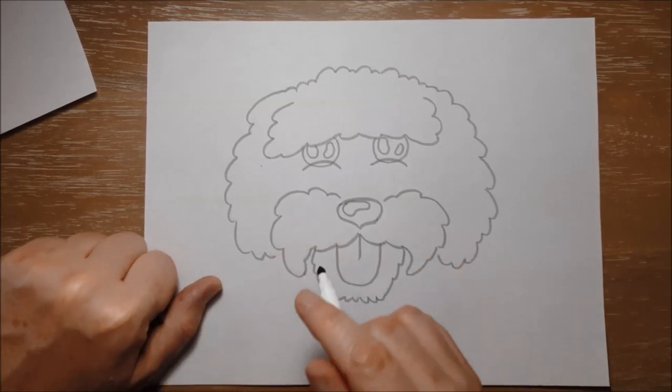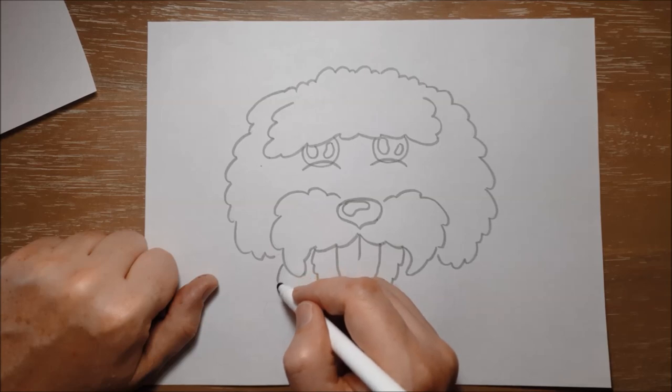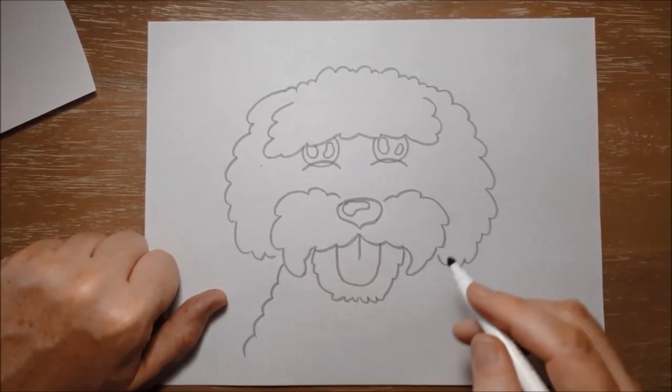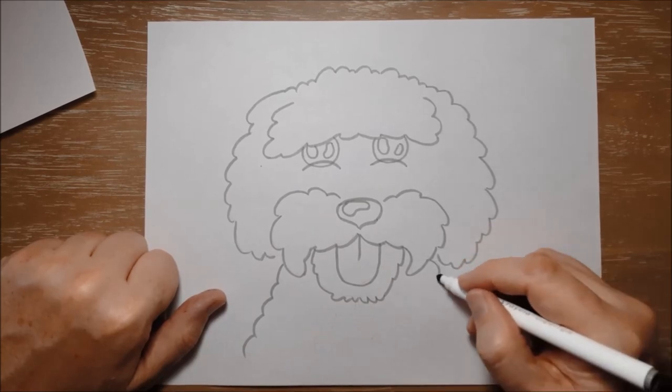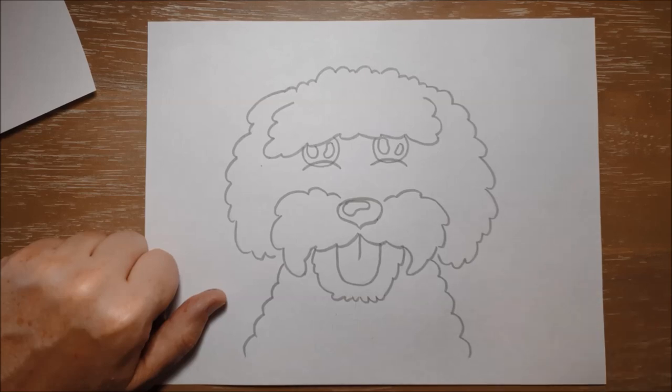And then we'll put the two sides in. We'll put in kind of her neck and maybe where her shoulders would be. And again we're always doing these little fluffy shapes. Just like that.